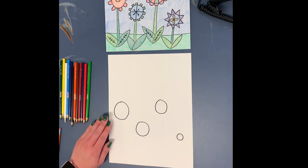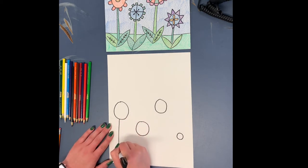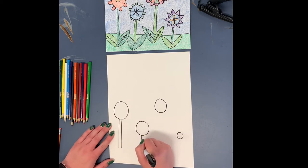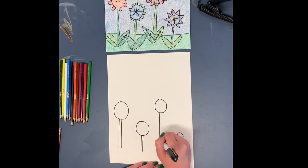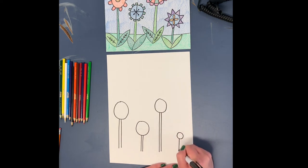Your next thing you want to do is draw your flower stems. If you need to pause the video anywhere, if I'm going too fast, you can pause your video and come back to it later. So there are some stems.